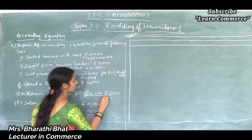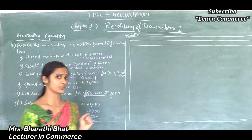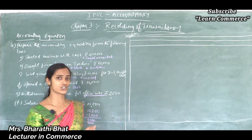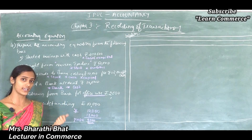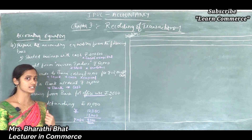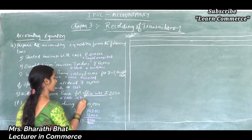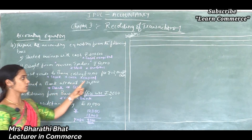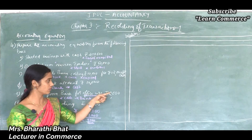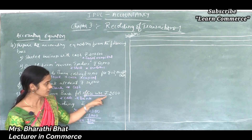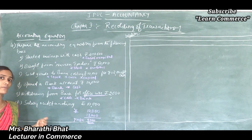Withdrawn from bank for office use — don't be confused here. If it were withdrawn from bank for personal use, then it would affect cash and capital because it is considered as drawings. But here it says office use. They mentioned clearly the word 'office use', so it is a business transaction affecting the business account. Cash is deducted and bank is also reduced. He had 10,000 initially deposited, then withdrew 2,000 for office use — so bank decreases by 2,000 and cash increases by 2,000.